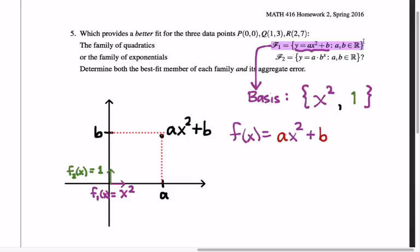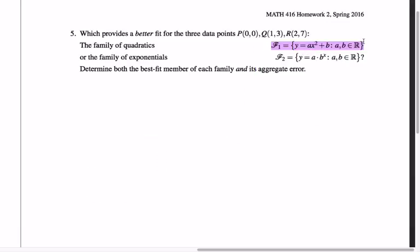This was all a roundabout way of getting to Brian's question. We see how to do that with F1. We can find a basis for it and then use those functions x squared and 1 to build the system of equations that we end up needing to solve. But his question related not to F1 but to F2, because to do this with F2 is not as obvious.